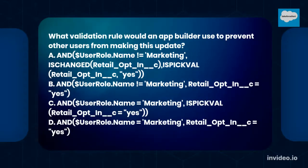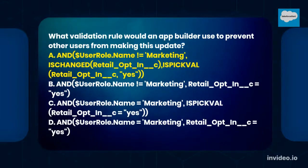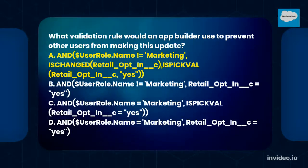The answer is option A: AND($usr.role.name equals 'marketing', retail_opt_in__c equals 'yes'). The correct validation rule uses: NOT($User.UserRole.Name = 'Marketing') AND (retail_opt_in__c = 'Yes').